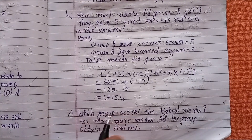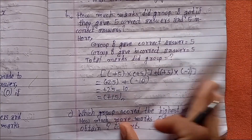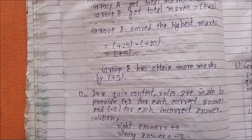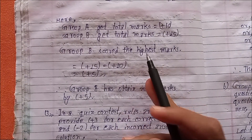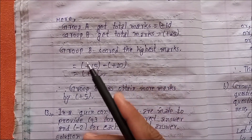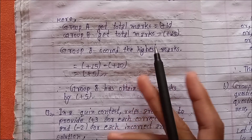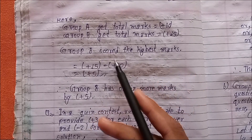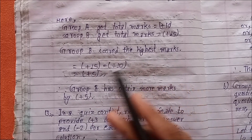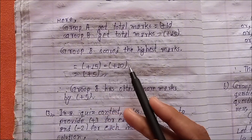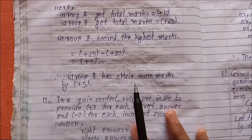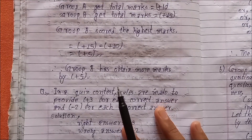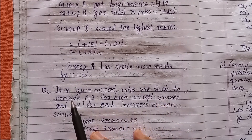(c) Which group scored the highest marks and by how much more? Group A total marks equals plus 10. Group B total marks equals plus 15. Group B scored the highest marks. Difference equals plus 15 minus plus 10 equals plus 5. Therefore Group B obtained more marks by plus 5.